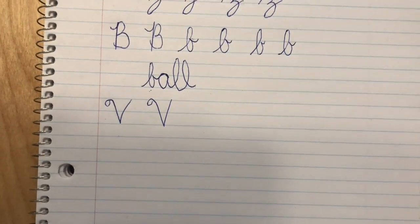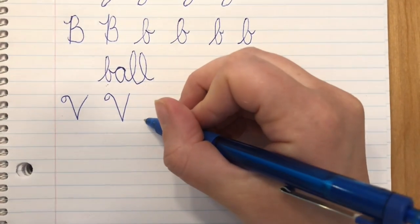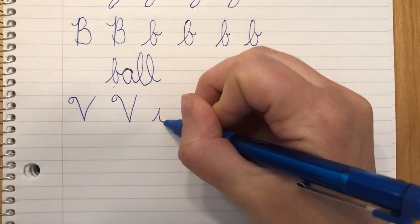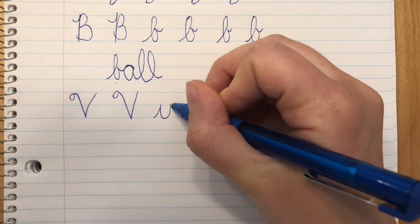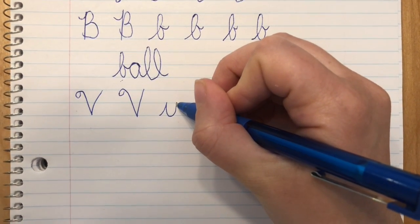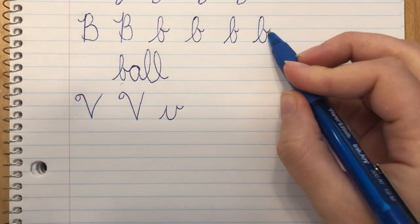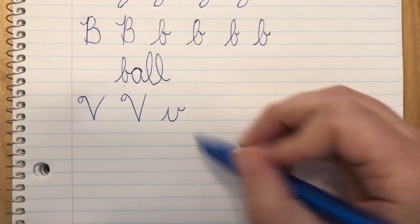The small v is a little bit trickier. Here's what it looks like. You're going to start like you're doing a letter u, but instead of going back down, you're going to do a little loop at the top just like we did with the B, and you're going to end in the middle.